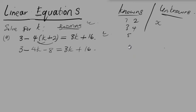We were talking about the knowns and the unknowns. In this equation, 3 is a known, negative 8 is a known, and 16 is a known — because these are numbers we already know. Our unknown is k, because k is the variable whose value we don't yet know. In a linear equation we want to separate the knowns from the unknowns: anything that's a variable goes to one side, and anything that's a number goes to the other side.